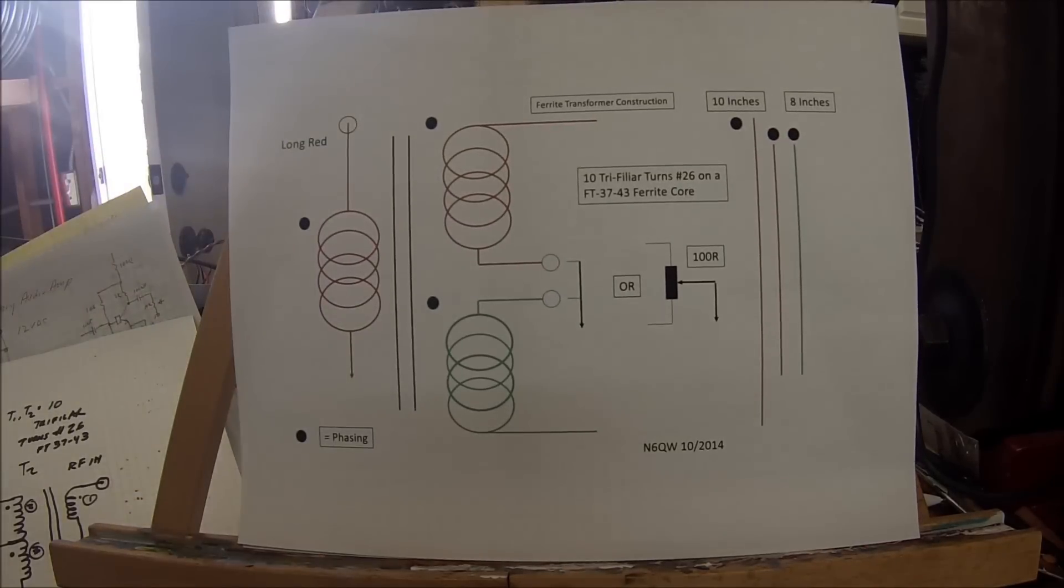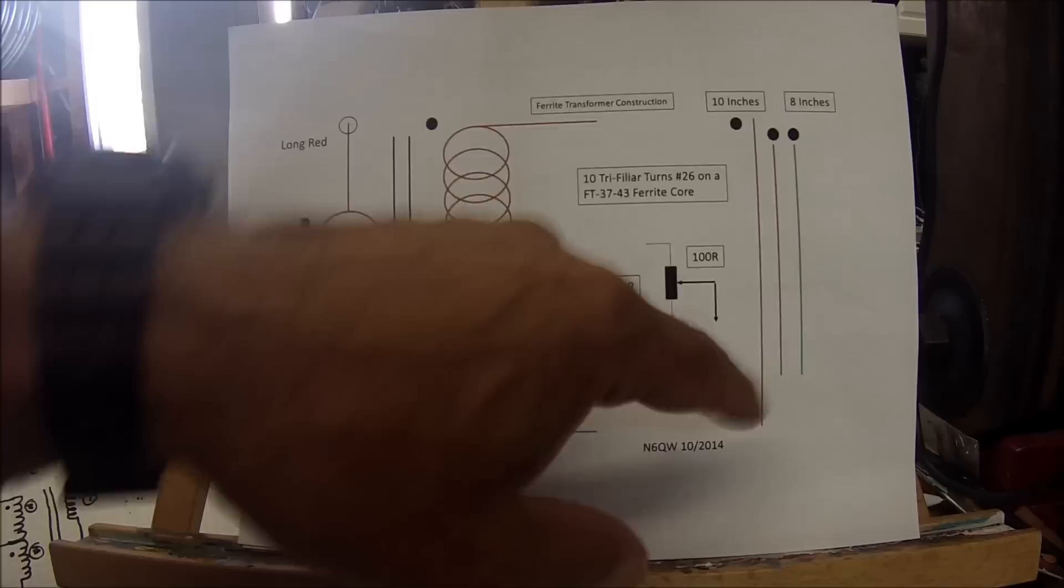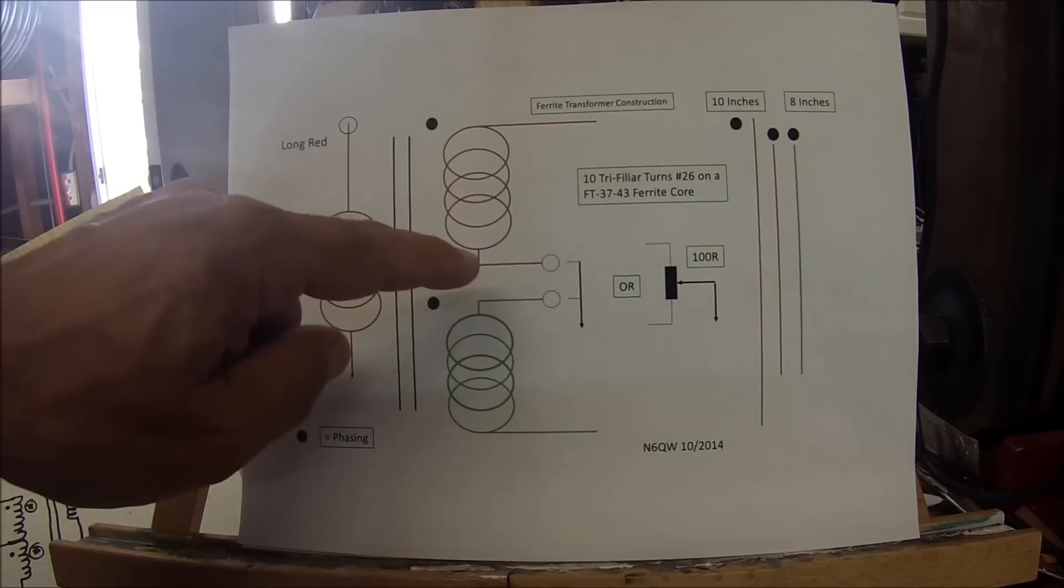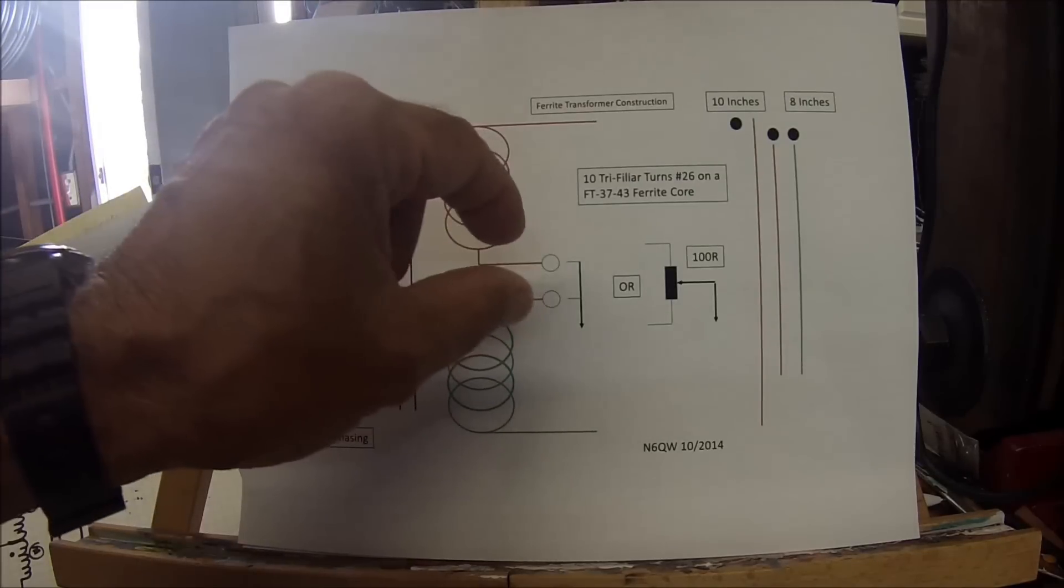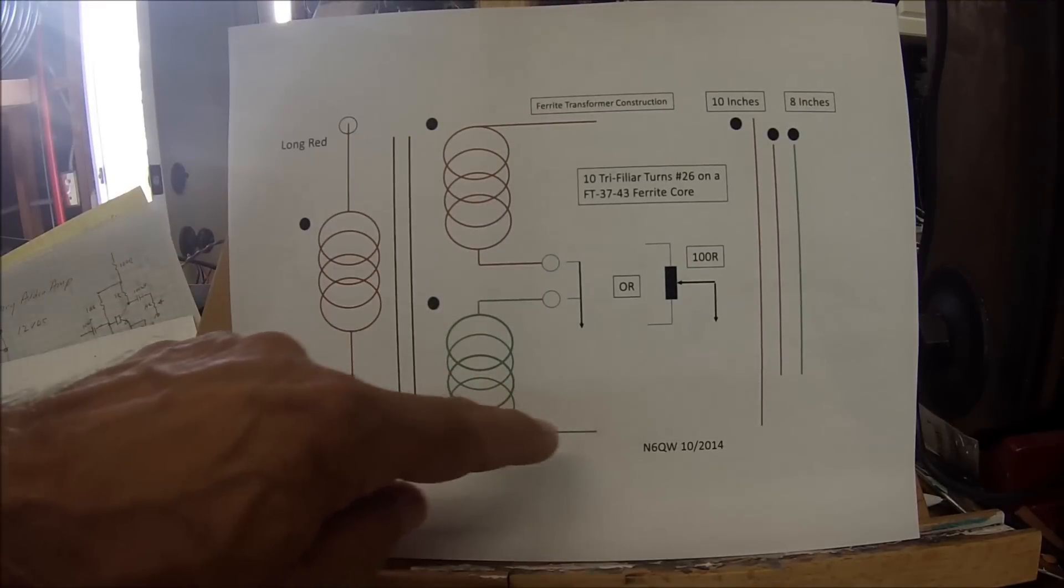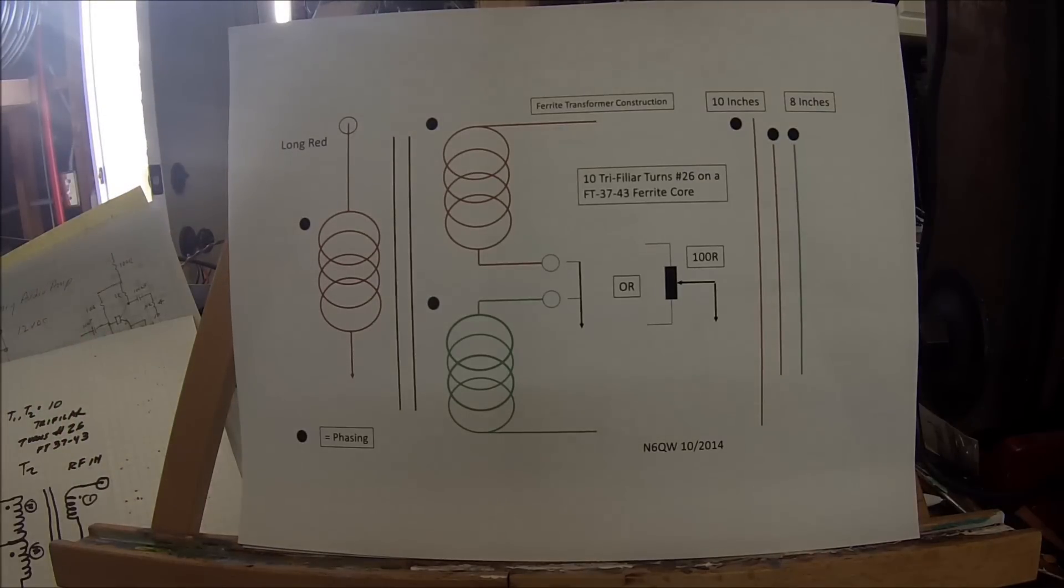It just takes a little time and practice. If you follow this tutorial - and I'll include this diagram in the video - you can see the three windings: the long red is 10 inches, the 8-inch red and green are twisted together. You wire the end of the red one to the start of the green one, which becomes that center terminal. It's either grounded or with the 100 ohm pot. This goes to the top of the bridge, that to the bottom for the LO side, and the reverse side for RF input. It's not too difficult, just takes time. This is N6QW and I'm going to end this part of the video.